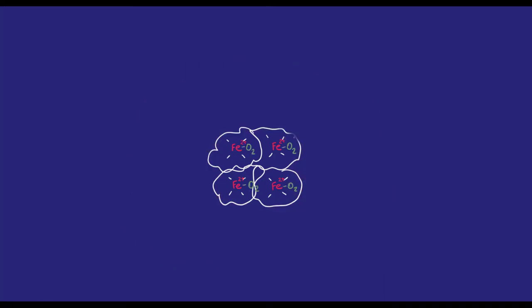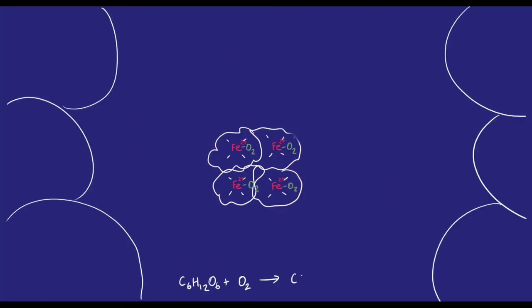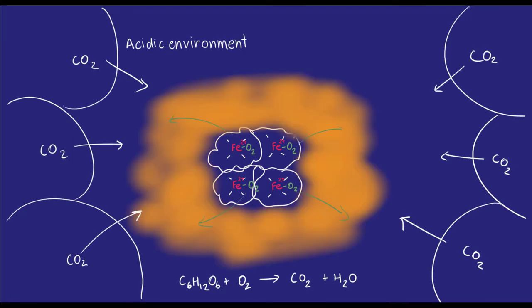When cells are working hard doing cell respiration, they release carbon dioxide, which makes the blood slightly acidic. With an environment more acidic, hemoglobin then releases oxygen more readily, which the cell can rapidly use because it's working hard.